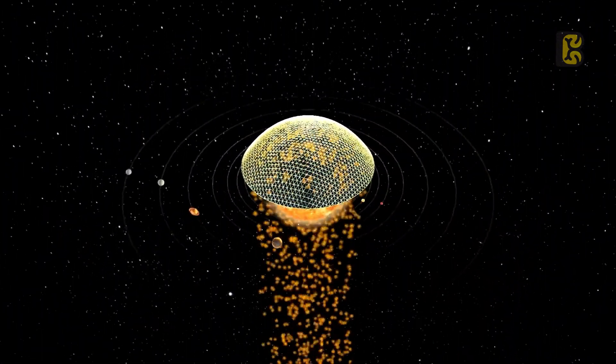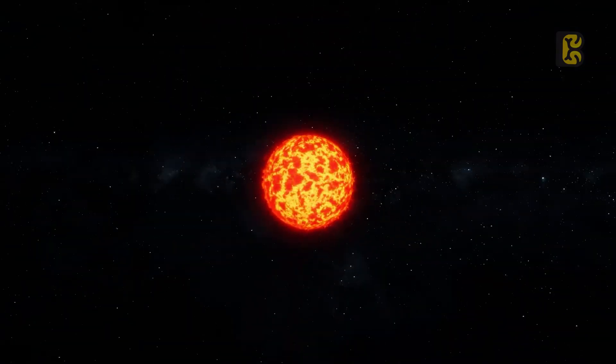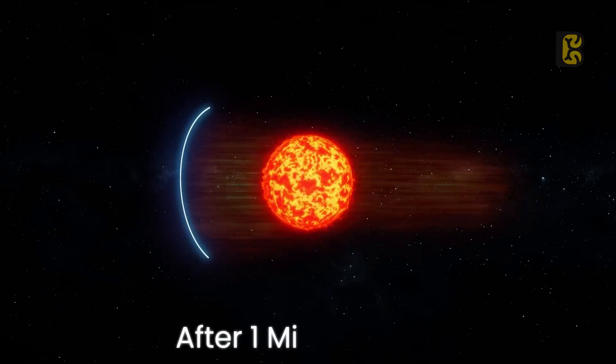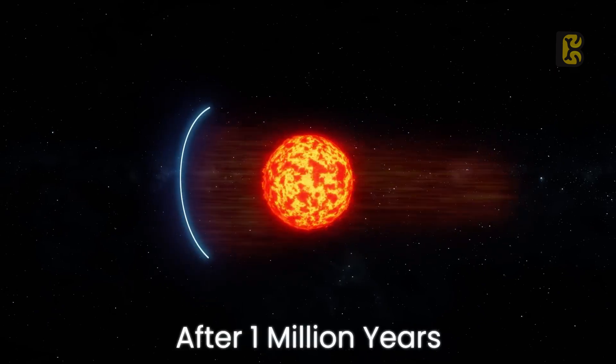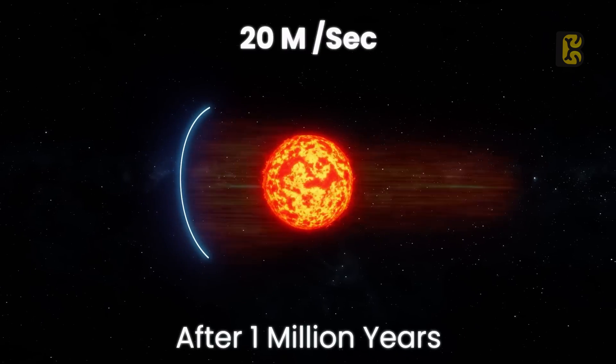However, while this model is entirely possible, sourcing the materials might be a bit challenging. But the problem is that its thrust won't be as powerful as many of you might be imagining right now. According to calculations, about one million years after the mirror is installed, the Sun's movement speed will reach 20 meters per second.